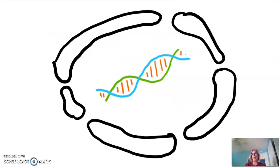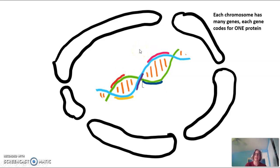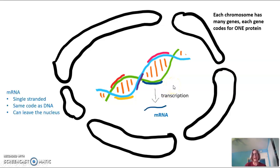Taking a closer look at the nucleus: I have my nuclear double membrane and one chromosome abbreviated as a double-stranded DNA molecule. Each chromosome has many different genes and each gene has the code to make one protein. DNA never leaves the nucleus, so through a process called transcription, a copy of that gene is made in the form of mRNA.